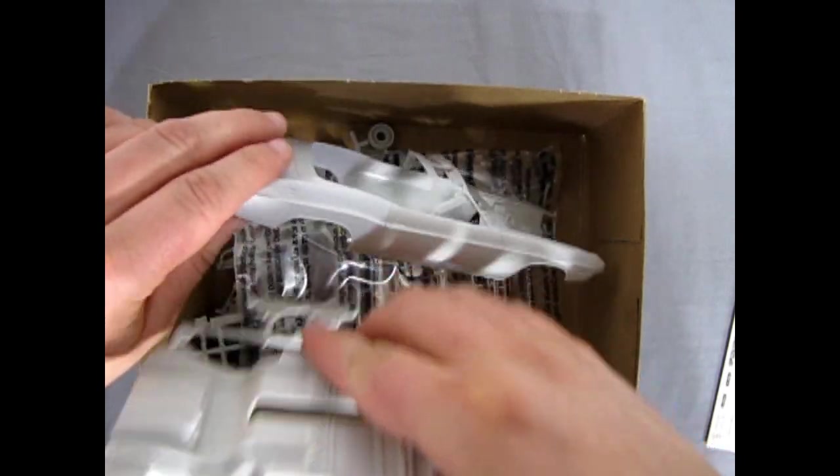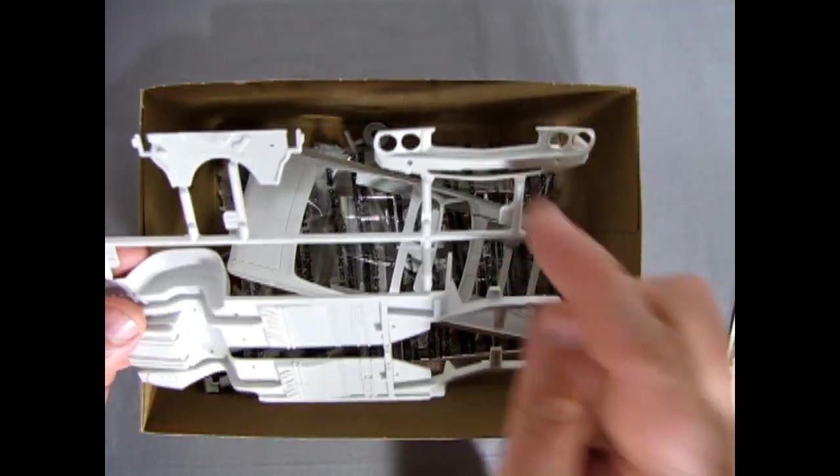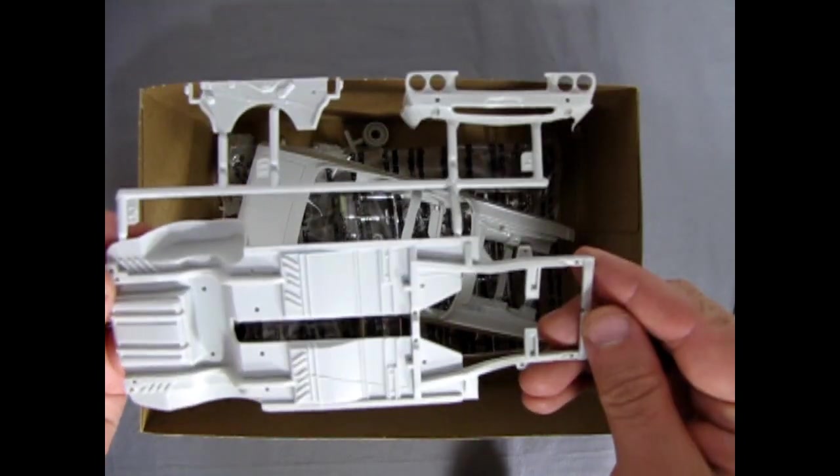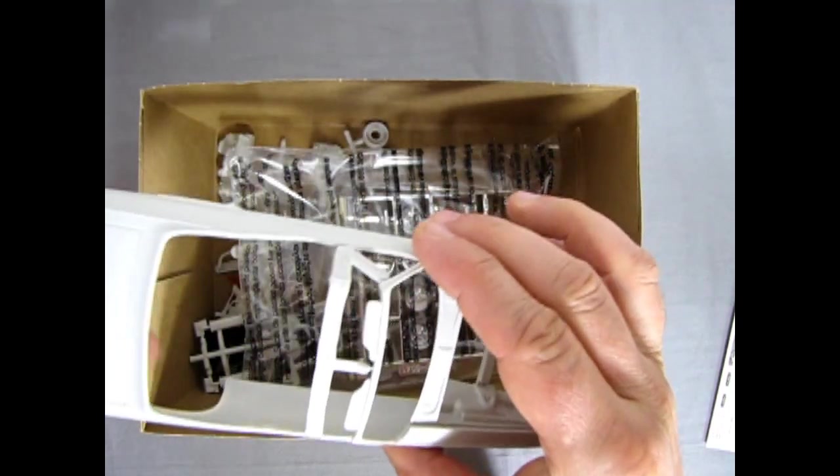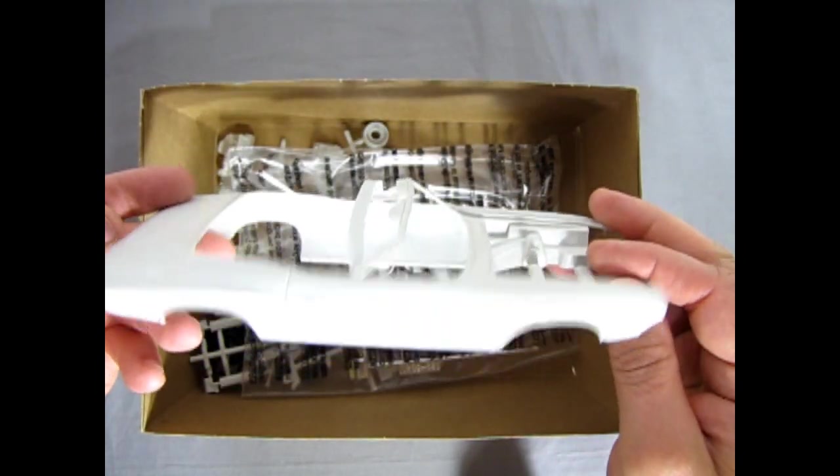Our chassis. Whoops. A front clip and firewall. And then here's our body. The convertible there.